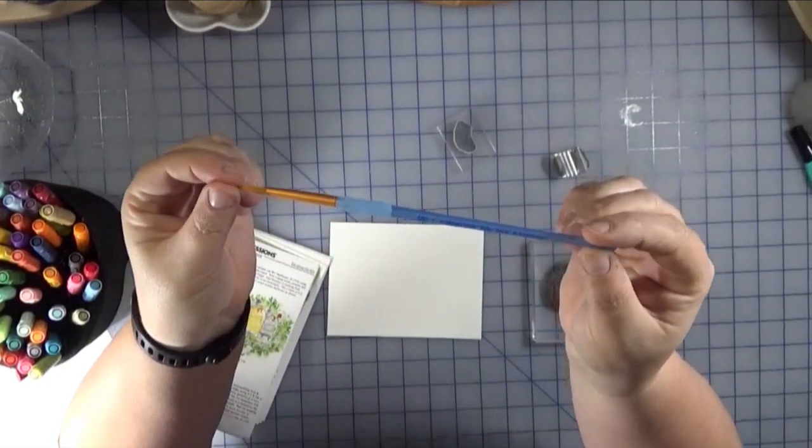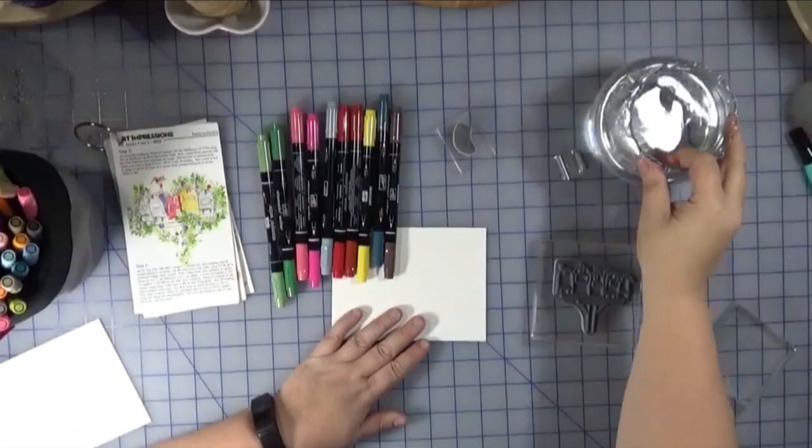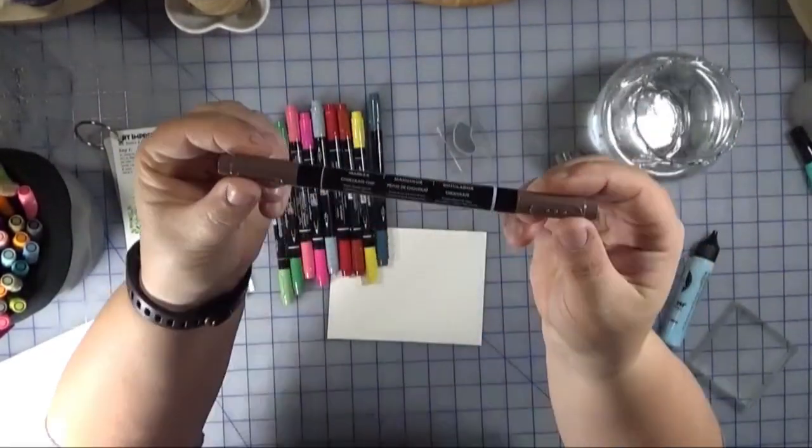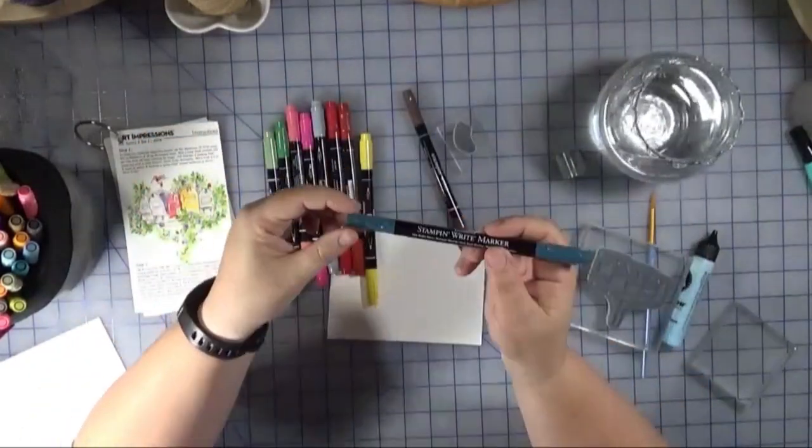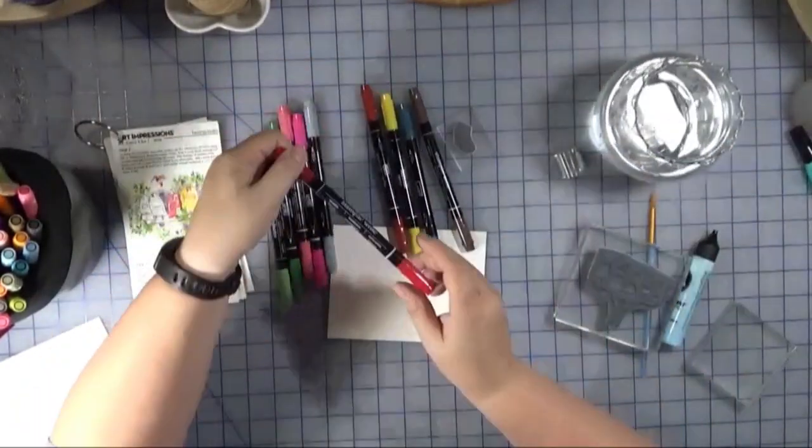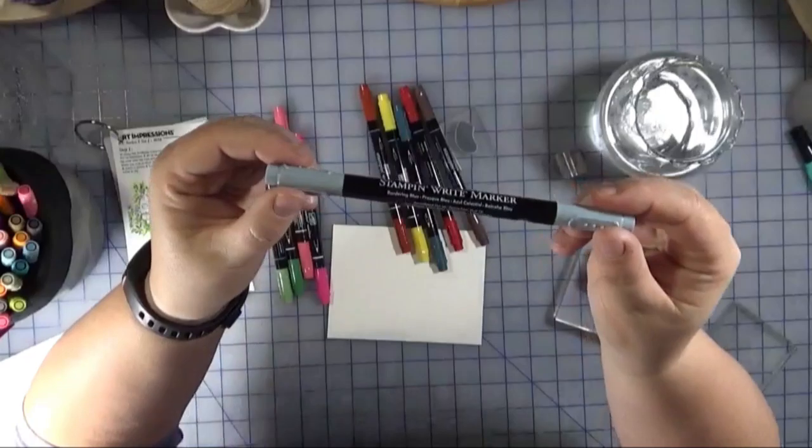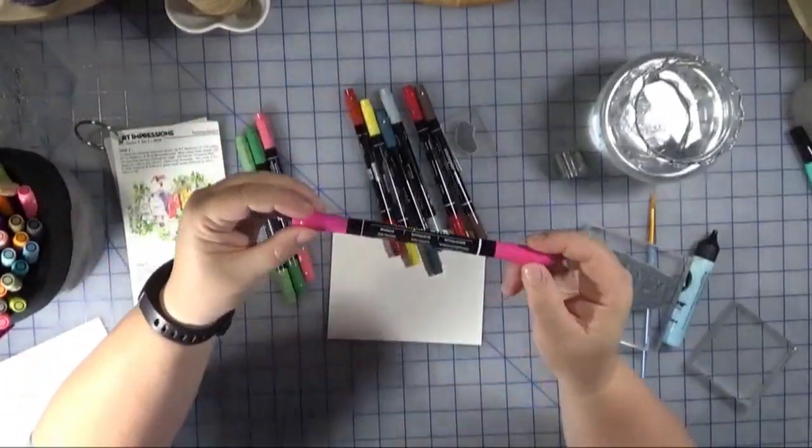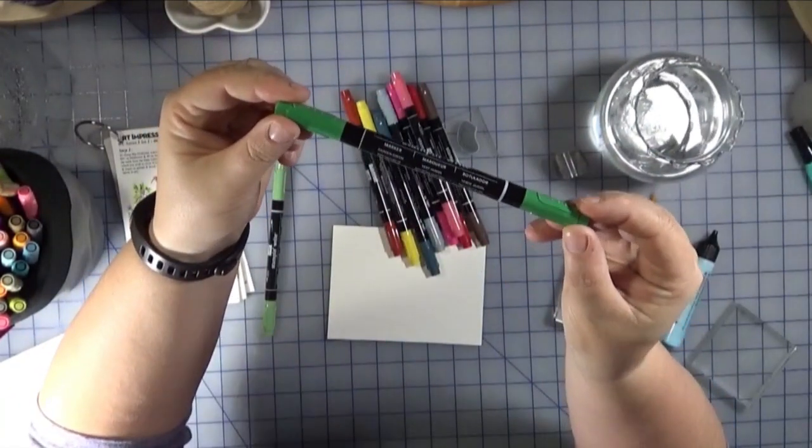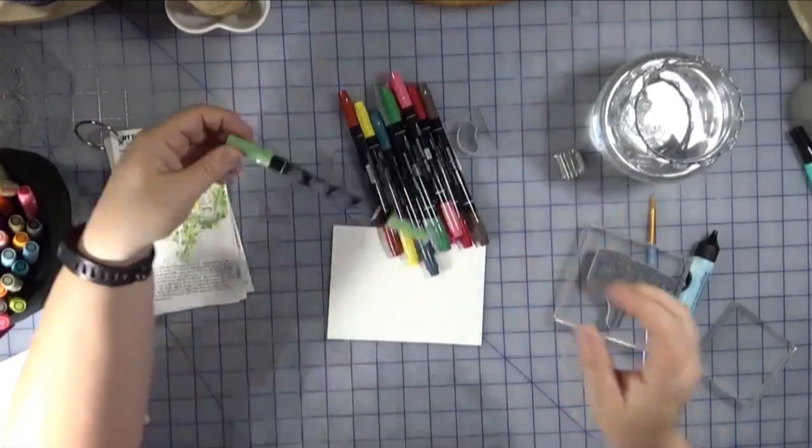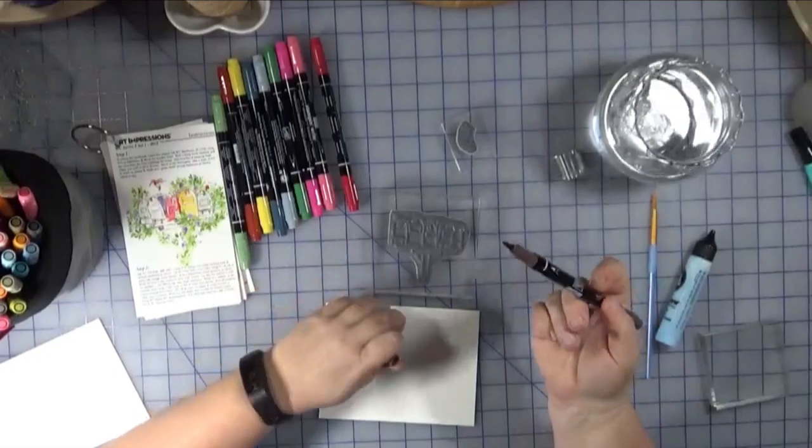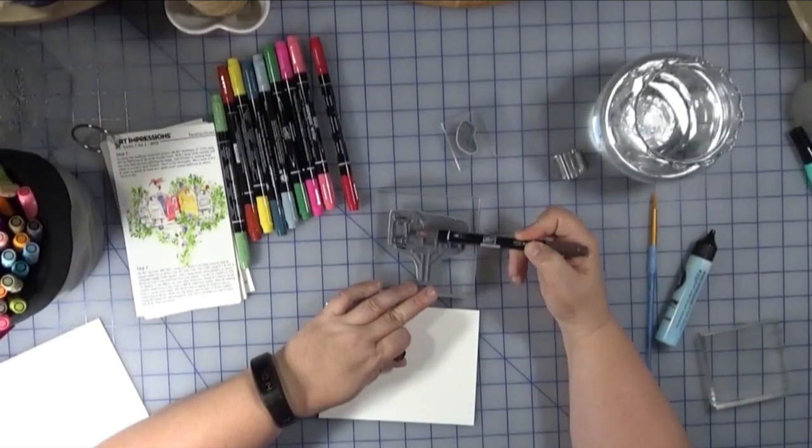I'm going to be using my Stampin' Up markers to do this. I believe Art Impressions uses Marvy, but really any water-based marker will work. I'm going through different colors: Chocolate Chip, Not Quite Navy, Daffodil Delight, Cajun Craze, Real Red, Bordering Blue, a couple different pinks, Garden Green and Wild Wasabi. I'm using the Chocolate Chip to outline the main image of the mailboxes.